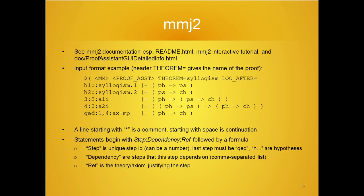MMJ2 is basically a text editor. It comes with documentation. Readme.html, in particular, will tell you how to install it. It has a little interactive tutorial. Inside the doc directory, the proof-assistant-gui-detailed-info.html file has more detailed information.